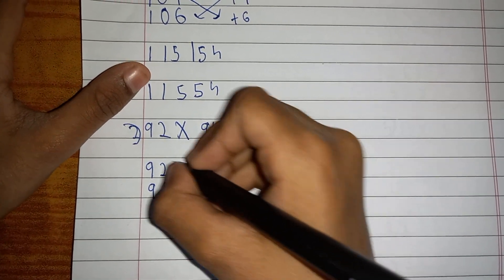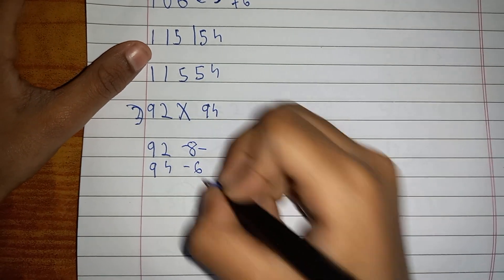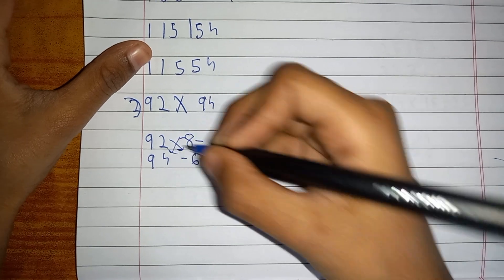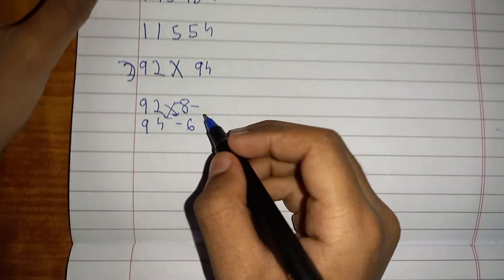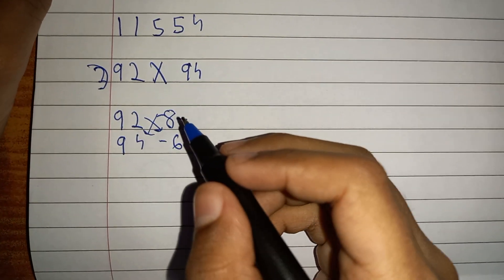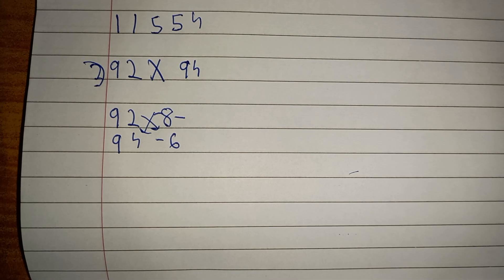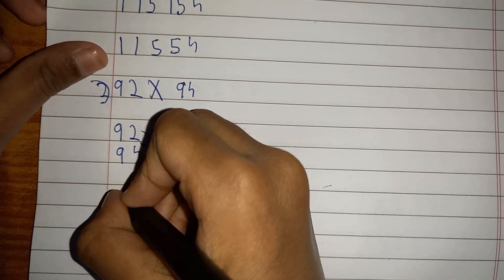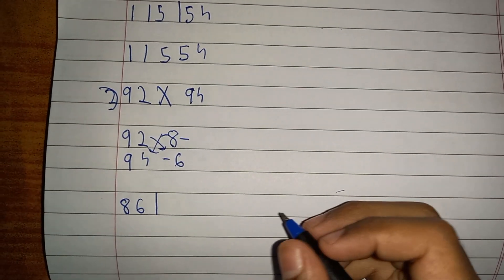And minus 6. Now you have to do the same. You're going to do it. This time you have to do 92 minus 6, or 94 minus 8, which will come as 86. So write 86, keep a line, then you have to...